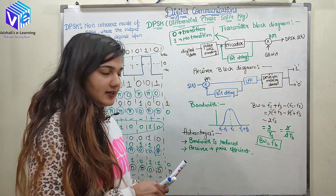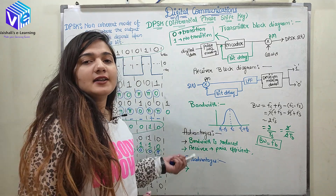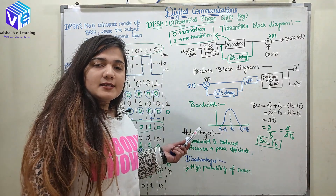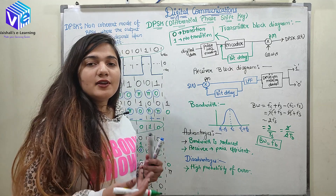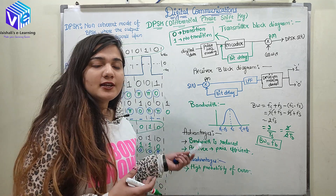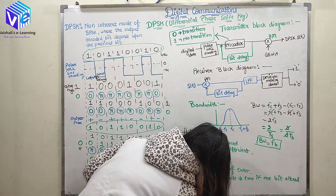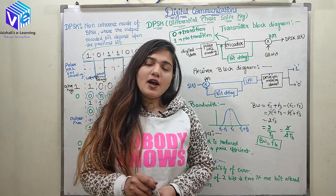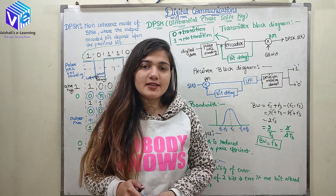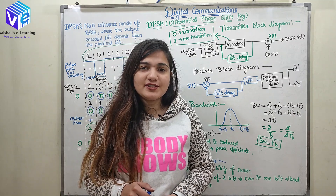The disadvantage of DPSK is that it has a high probability of error. Since the previous bit is also sent, if either the present bit or the previous bit is altered, the total outcome will contain errors. I hope you now understand DPSK and the various aspects discussed in this session. If you liked this video, please share it with your friends and subscribe to this channel. Thank you.